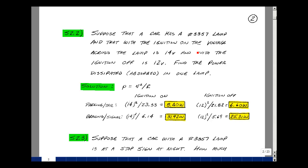Suppose that we have a car that has a 3357 lamp, and that with the ignition on, the voltage across the lamp is 14 volts. And with the ignition off, it's 12 volts. Let's find the power dissipated in one of these lamps.